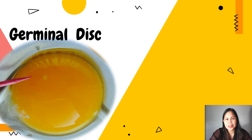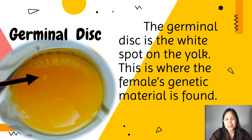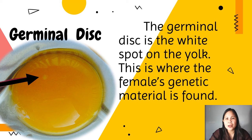The germinal disc is the white spot on the yolk where the female's genetic material is found. A germinal disc is a plateau-like region of cells from which the embryo begins to develop in the fertilized ovum of many vertebrate species. It is also called blastodisc or embryonic disc. The germinal disc is barely noticeable as a slight depression on the surface of the yolk. When the egg is fertilized, sperm enter by way of the germinal disc, travel to the center, and a chick embryo starts to form. Since store eggs are not fertilized, this is not as easy to recognize.